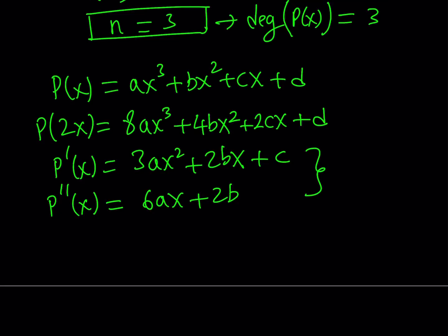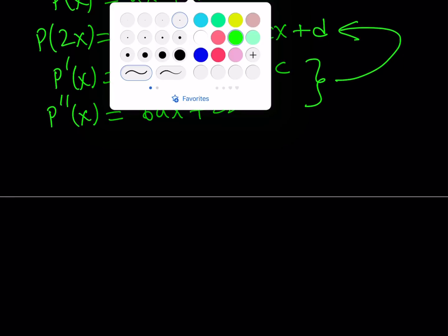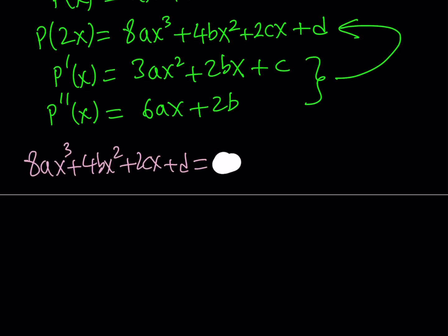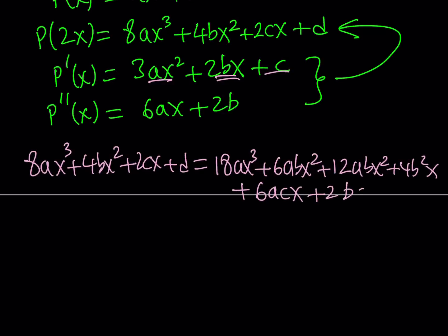We can go ahead and multiply these two together and set it equal to P(2x). If I set 8ax³ + 4bx² + 2cx + d equal to the product of these, I'll multiply them directly. Distribute to get 18a²x³ + 6abx² + 12abx² + 4b²x + 6acx + 2bc.